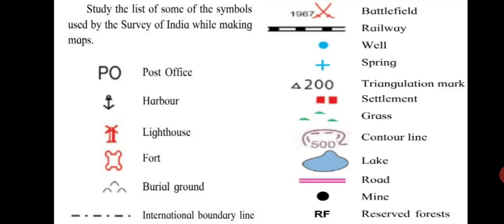Now let's have a look at some signs and symbols. Study the list of some of the symbols used by the Survey of India while making maps. PO stands for post office. The symbol for harbour is shown. Similarly, symbols are shown for lighthouse, fort, burial ground. International boundary line is shown by a line, a dot, again the same line, dot. Battlefield, railway, well, spring, triangulation mark, settlement, grass, contour line, lake, road, mine, reserved forest. These are some signs and symbols which are used on a wide scale.